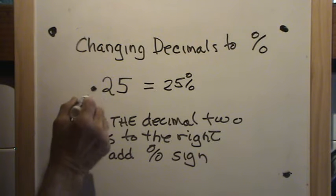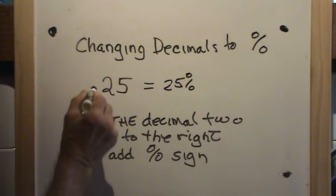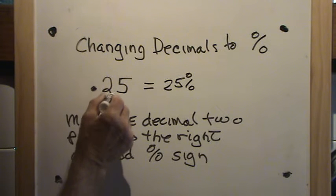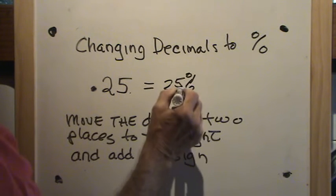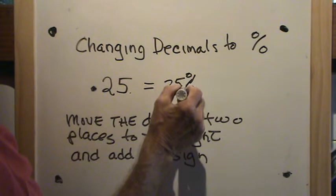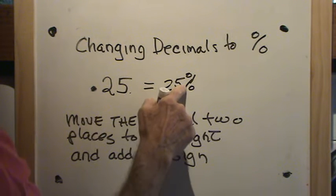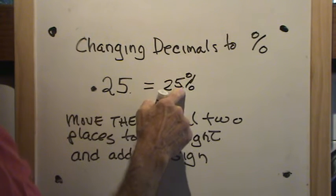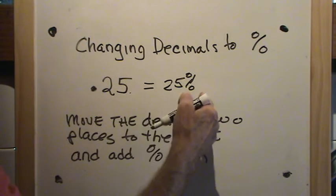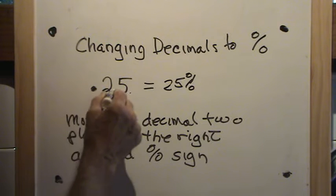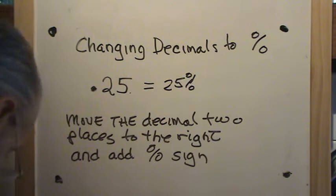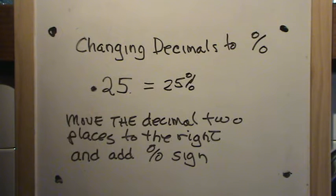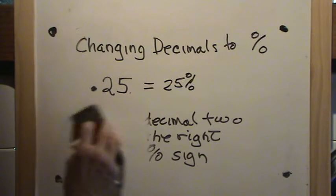In this example, we're moving the decimal two places to the right — one, two — and we put the percent sign. We do not put the decimal point there, because there is no number that follows it. So we move the decimal two places to the right and put the percent sign. It's quite a simple rule, quite a simple process.